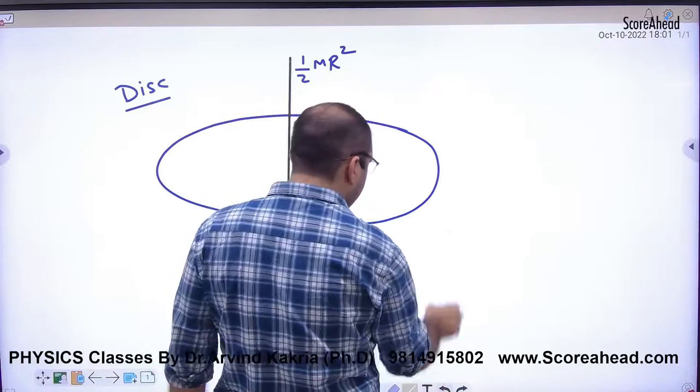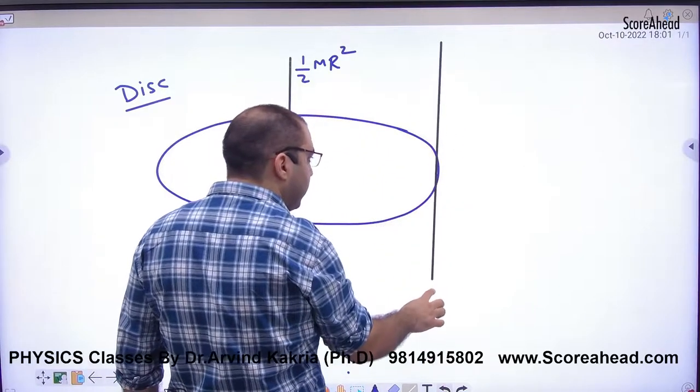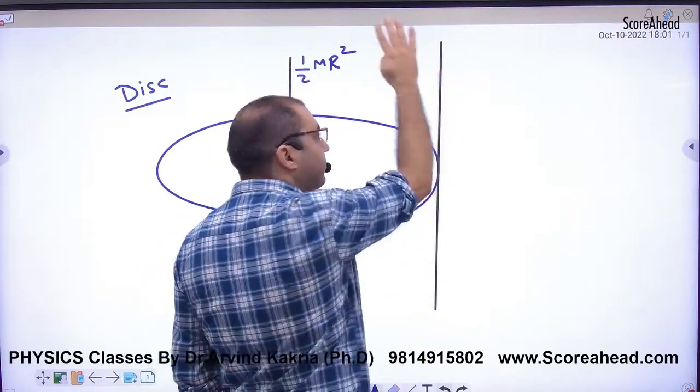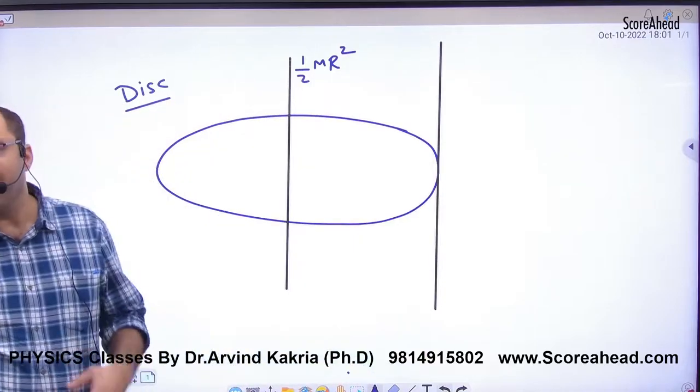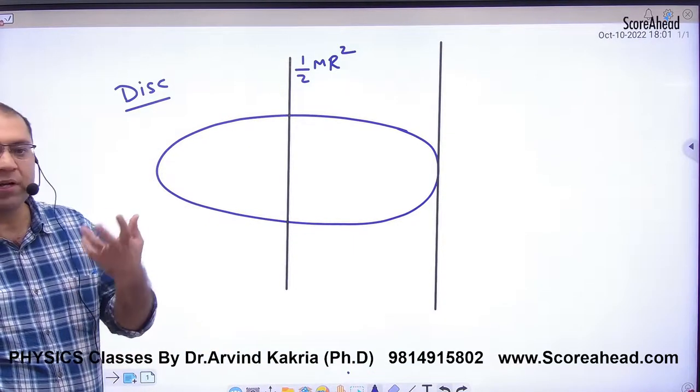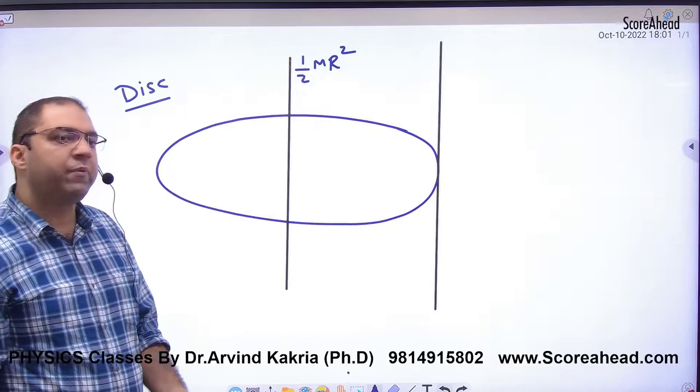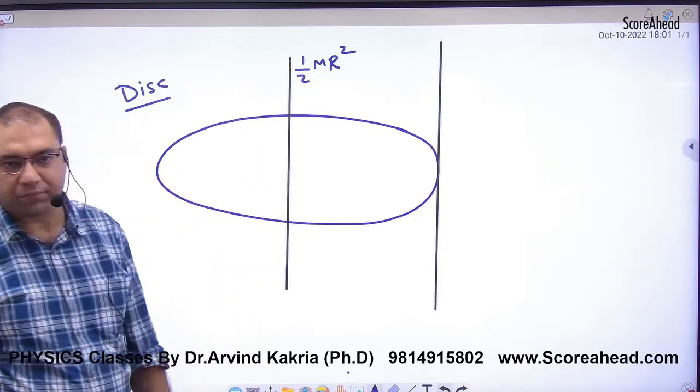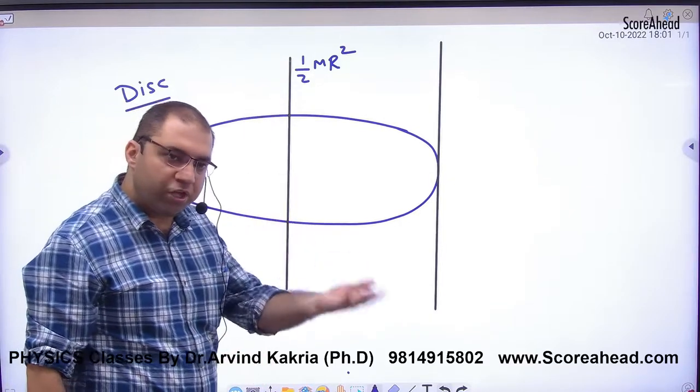Now suppose I have changed my axis. I want to find the moment of inertia about a different axis. Now there is a problem. I have my result for the center axis, but now the axis has changed.